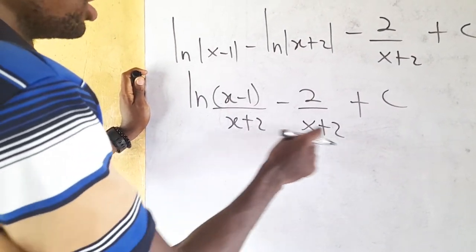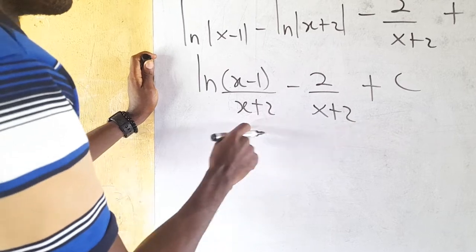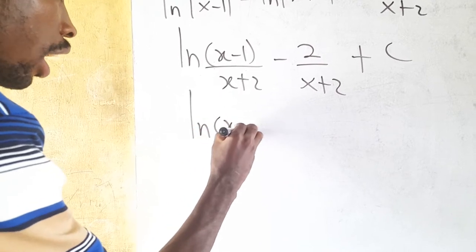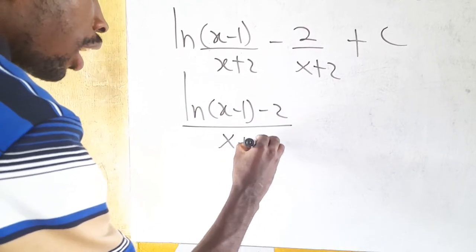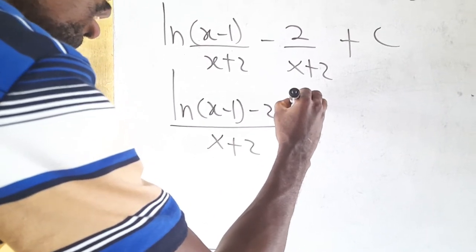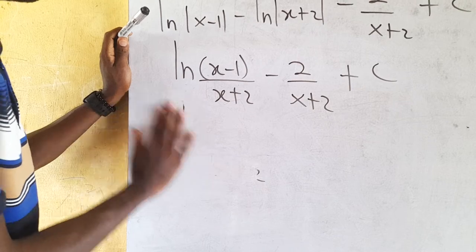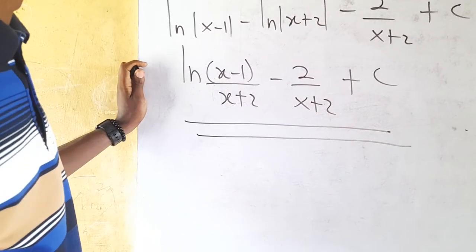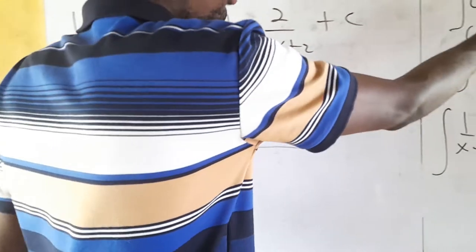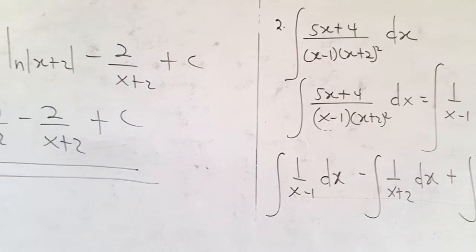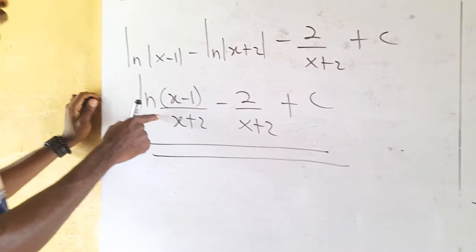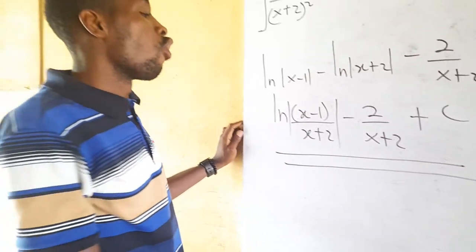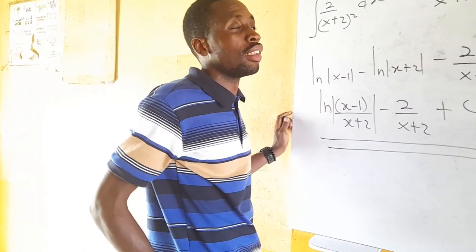Since the ln is affecting the whole logarithmic part and the remaining term is separate, we cannot combine them further. So this is our final answer for the integral of this function. We'll solve one more question so that you'll be fully abreast with the concepts.